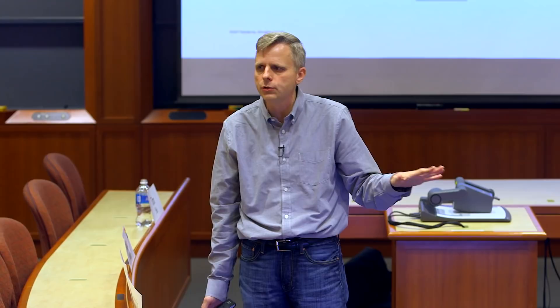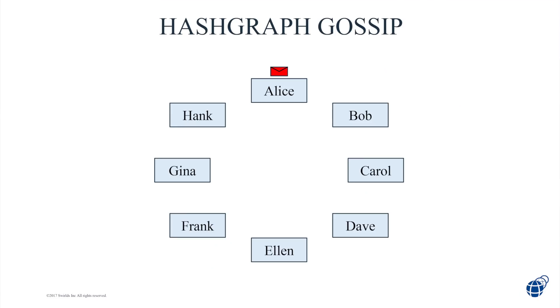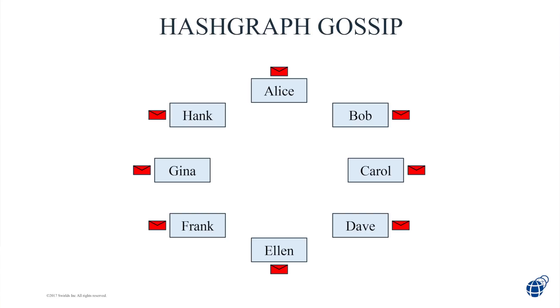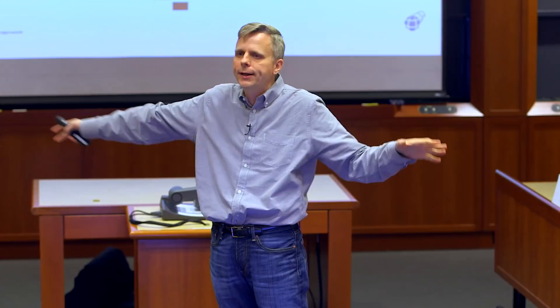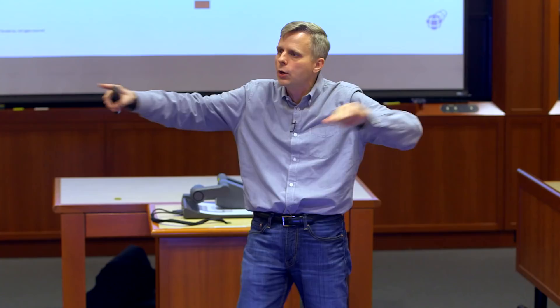Here's the whole algorithm in two minutes. Alice has a transaction she wants everyone to know. So she tells someone totally randomly — the simplest algorithm imaginable. Now Dave knows it too. Each of them tells someone at random, now four people know it. Each tells someone randomly — now eight. It explodes outward exponentially fast, and soon everybody knows it. If you attack one computer and shut it down, it doesn't matter — it still spreads to everyone else. There's no one computer that's a bottleneck.